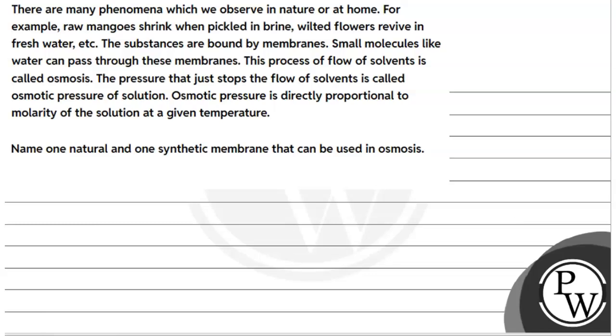Let's read the question. There are many phenomena which we observe in nature or at home. For example, raw mangoes shrink when picked in green, wilted flowers revive in fresh water, etc. The substances are bound by membrane and small molecules like water can pass through these membranes. This process of flow of solvents is called osmosis.